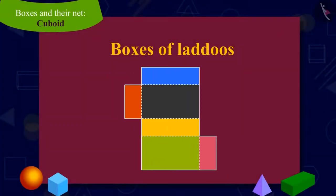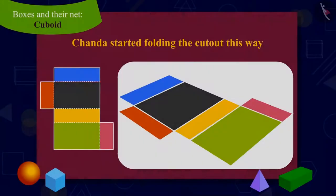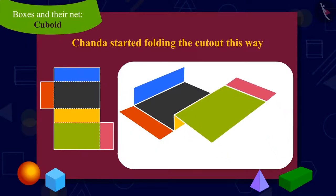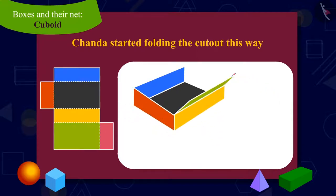Appu showed Chanda a cardboard cutout. He asked Chanda to fold the cutout on the line with dots on it. Chanda began to fold the cutout in this manner.